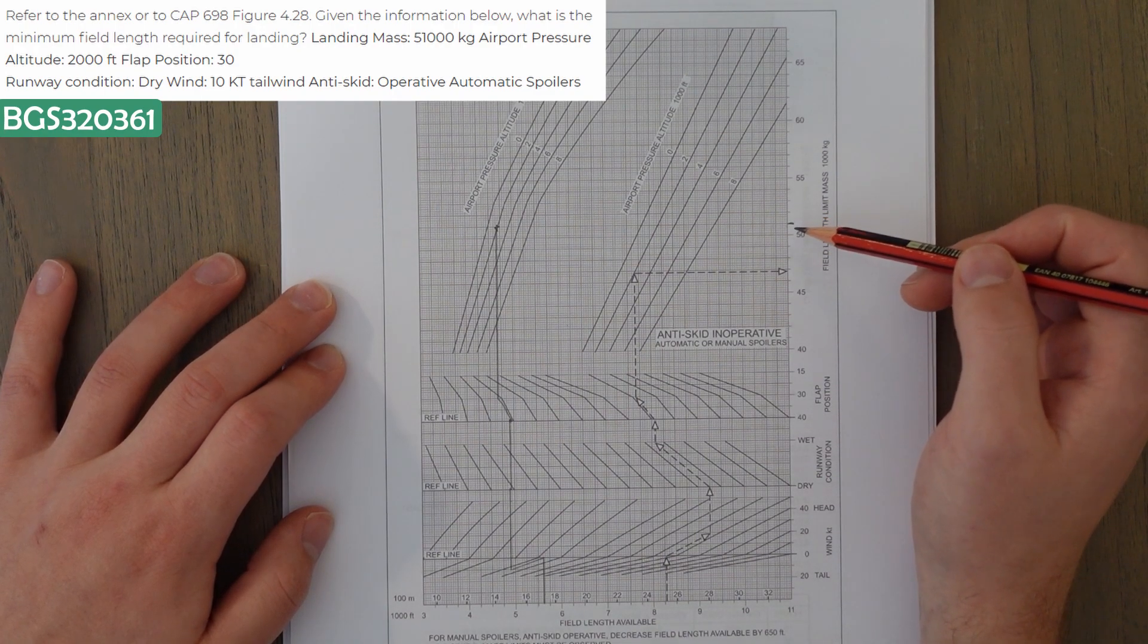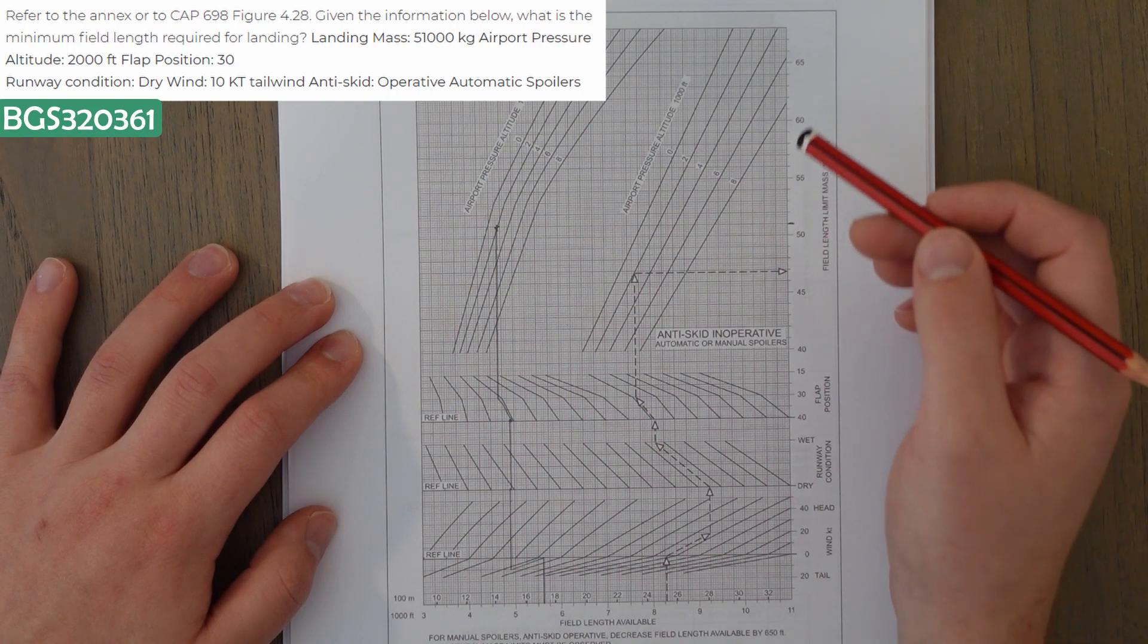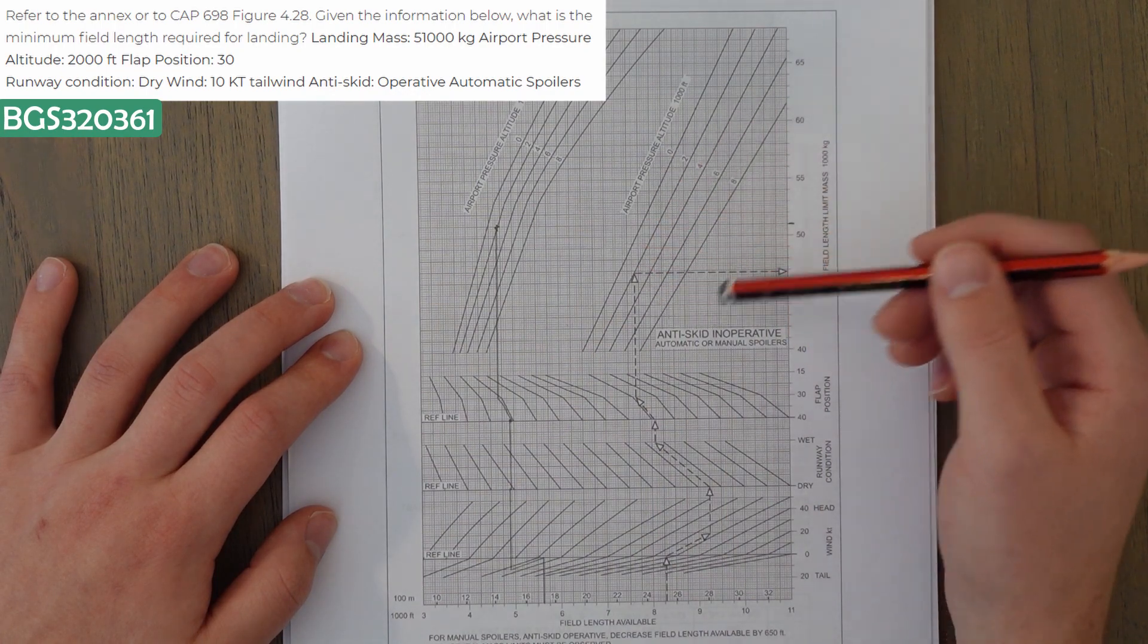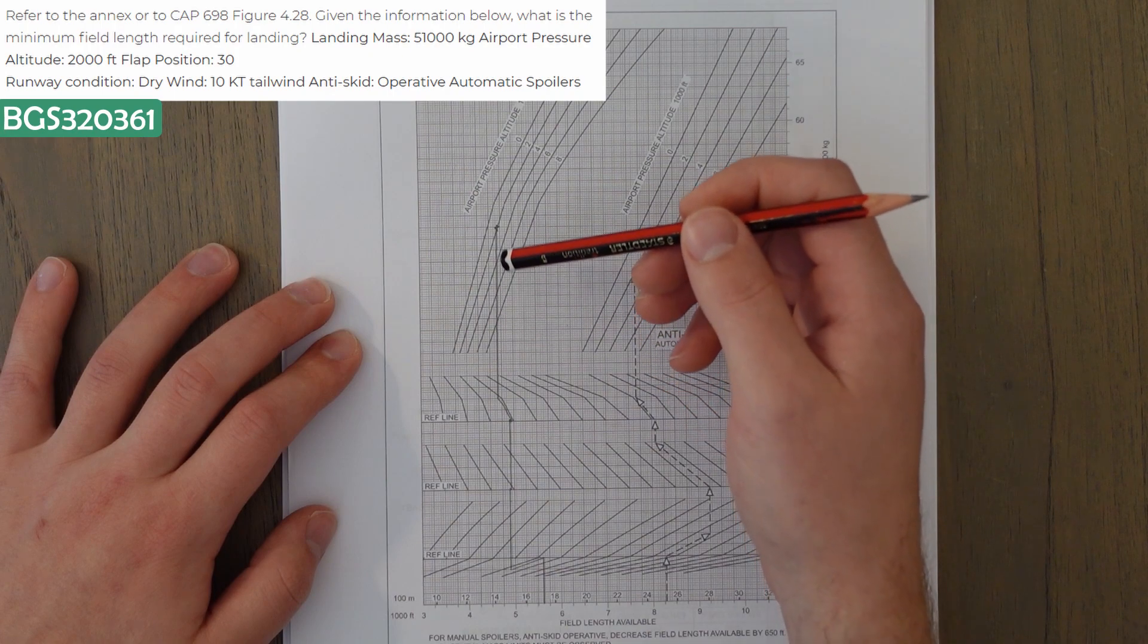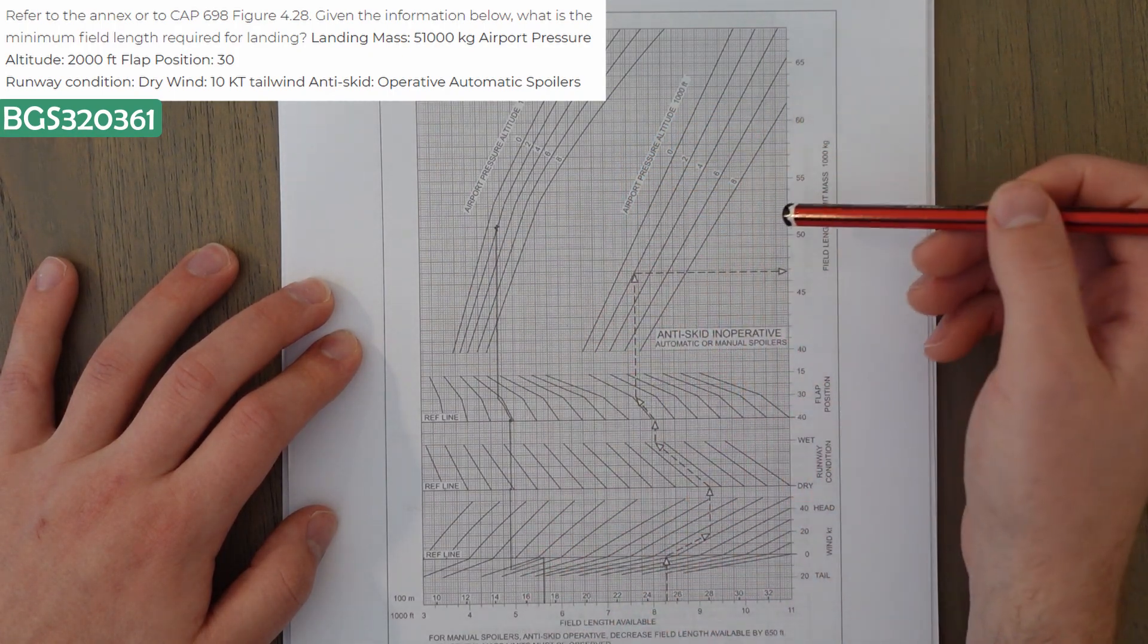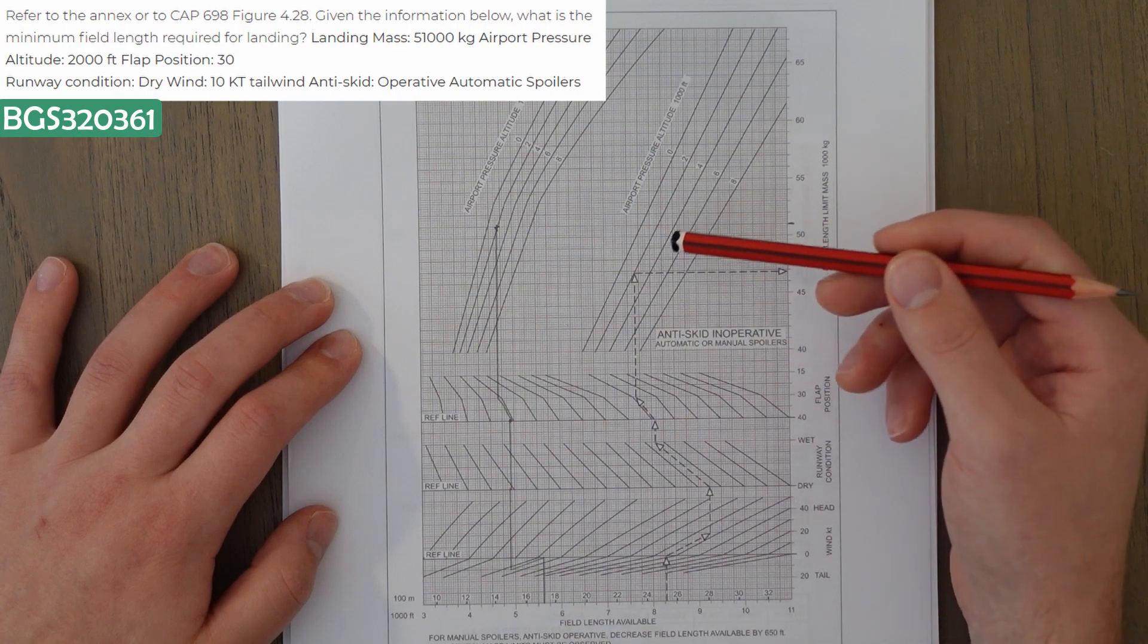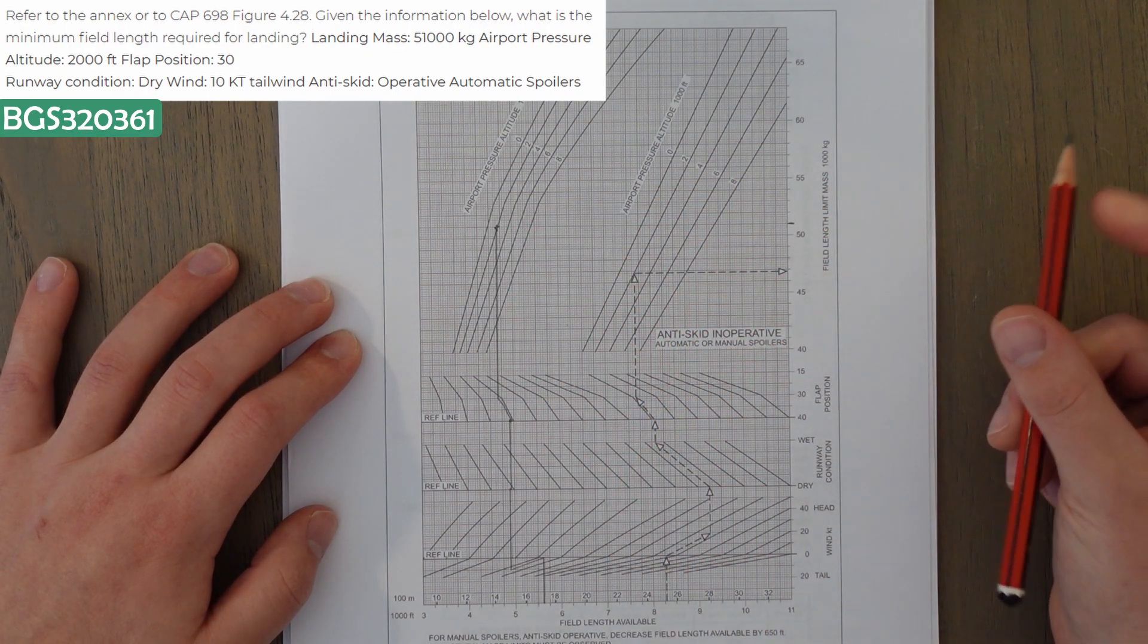Anyway, we've got 51,000 kilograms, and then we've got a pressure altitude of 2,000 feet, and we have two groups of lines here, one for where the anti-skid is working and one where it's inoperative on the right-hand side. If we projected all the way down to the bottom of the field length available, then if we go from this and 2,000, we'd get about just under 8,000. And then when we have a working anti-skid system, it reduces all the way down to just below 5,000.